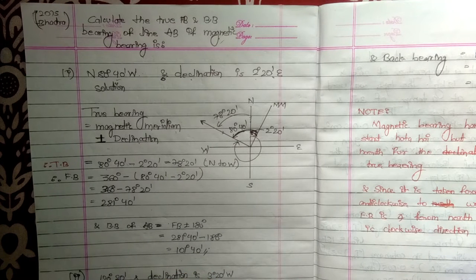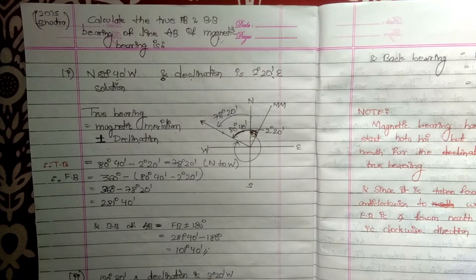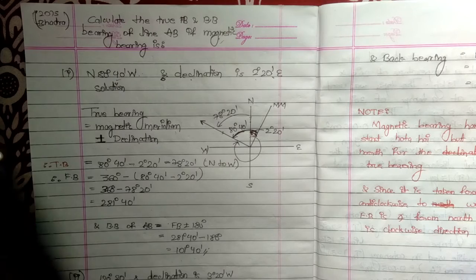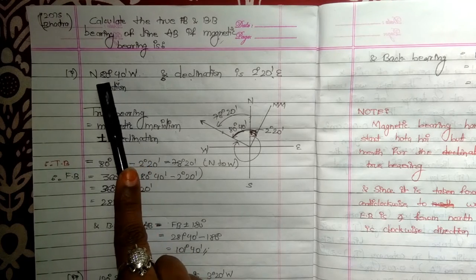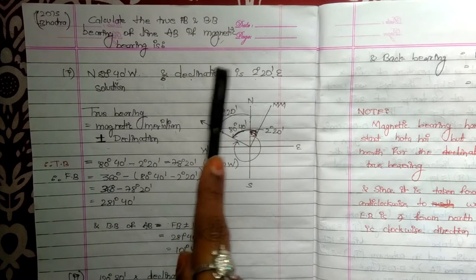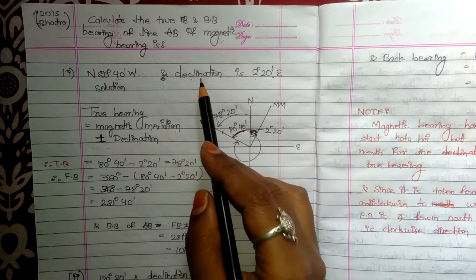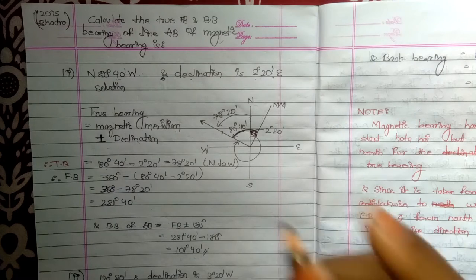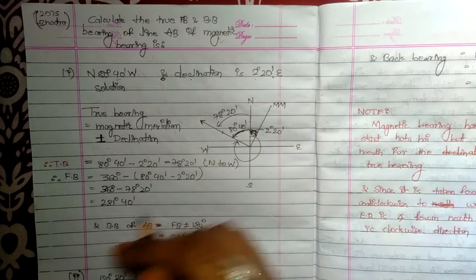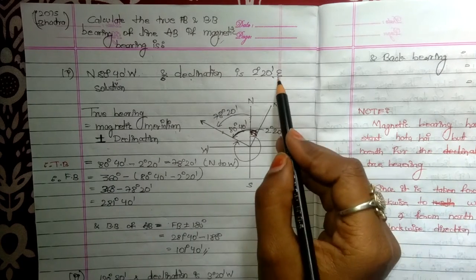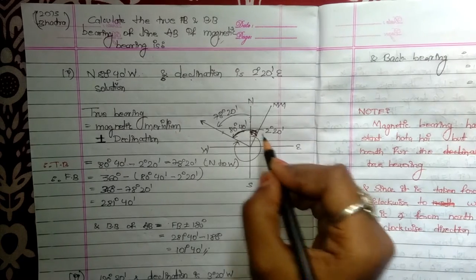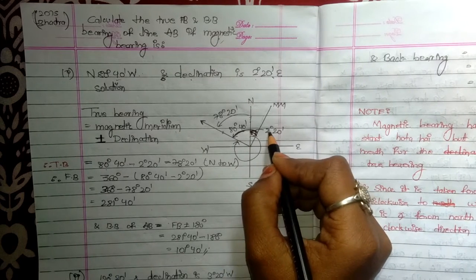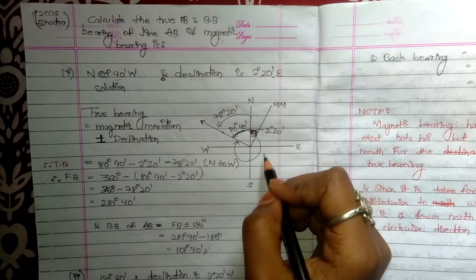Hello. This question is from 2075 Bhadra, and here we calculate true bearing, back bearing, and magnetic bearing. The declination angle has already been given. Declination is always from north, but the difference is that sometimes it goes east and sometimes it goes west. In our case, it is east — north to east — and we have made an angle of 2 degrees 20 minutes.